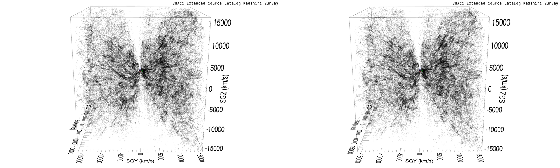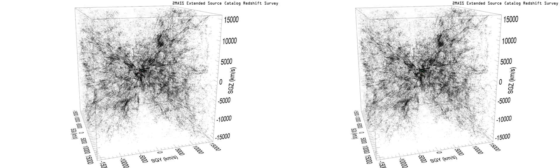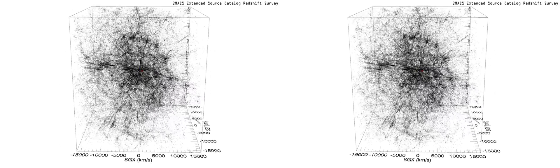The flux-limited selection of this survey results in a spatial coverage that is densest near the center. As we just saw during the zoom out, obscuration by the Milky Way creates the large vertical artificially vacant zone. Redshift space distortion causes clusters of galaxies to appear elongated towards the center of the cube.